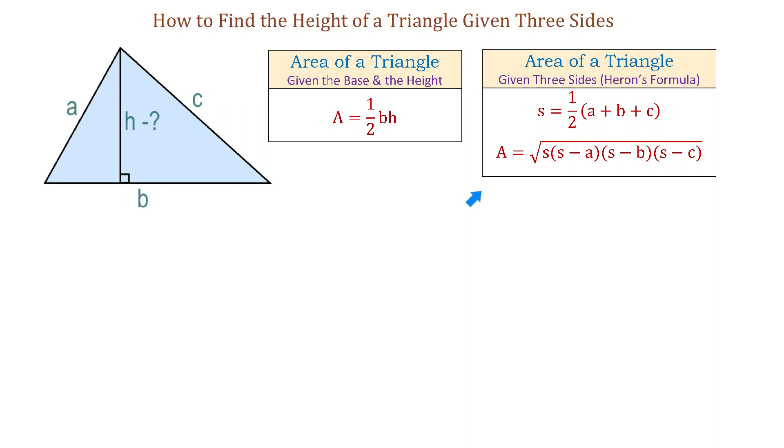And once we know this number, we use it in the formula: square root of s times (s minus a) times (s minus b) times (s minus c).